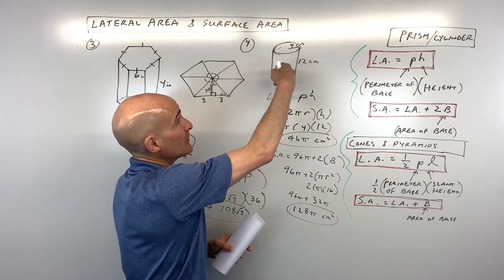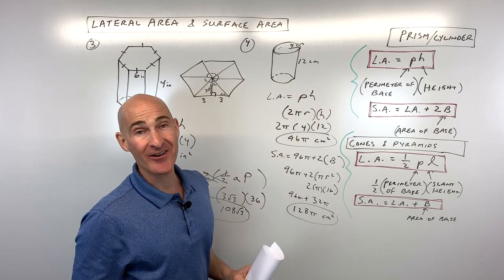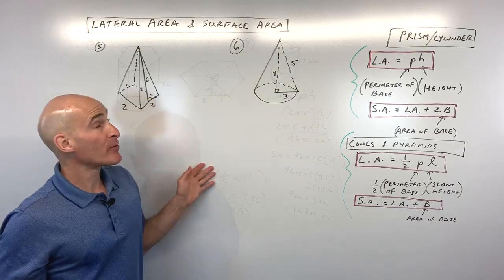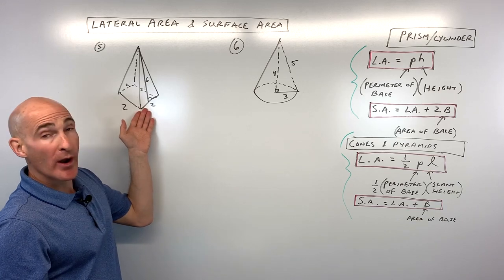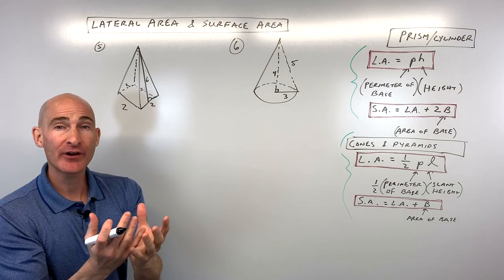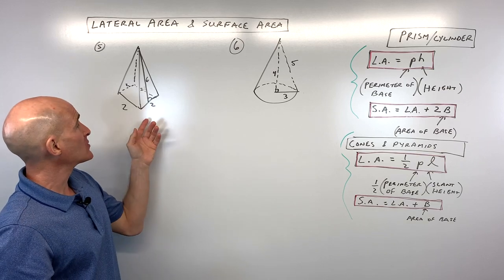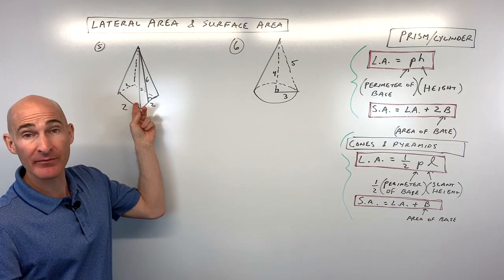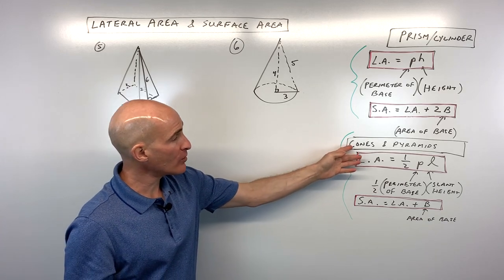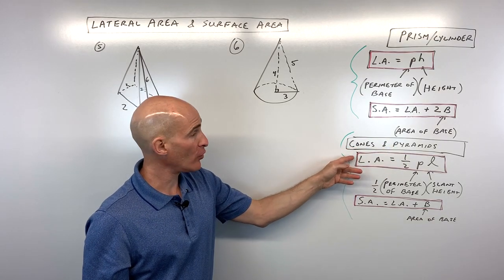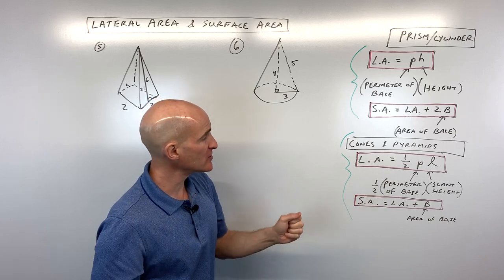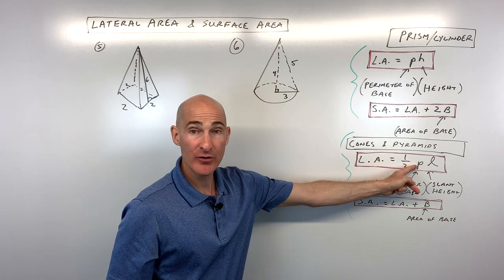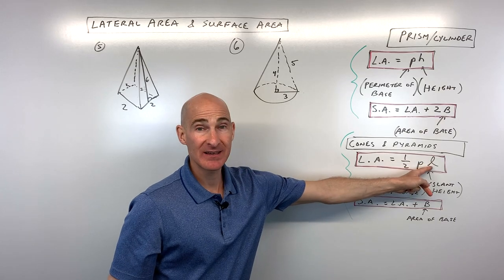That's how much paint you'd need to paint the entire can. Now let's move to cones and pyramids. Number five is a square pyramid. We want to find the lateral area — the area of the sides — and the surface area, which includes the base. For cones and pyramids, the lateral area equals one-half times the perimeter of the base times the slant height.